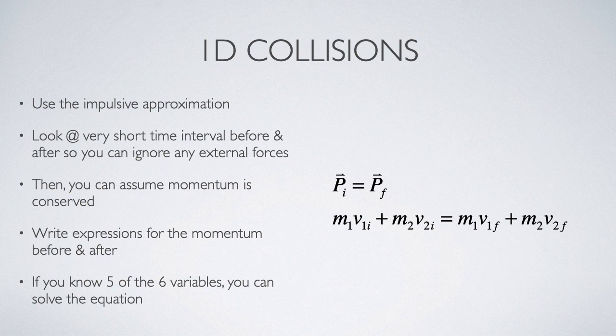So here's an example applied in a one-dimensional collision. Because the collision is one-dimensional, like my carts on the track, then I can handle the vector nature of momentum with plus and minus signs. I don't have to worry about angles and components. Assuming that we can apply the impulsive approximation, then we can say that the momentum is conserved. So I write expressions for the momentum before and after. The first term in that second equation is the momentum of particle one before the collision. The second term is the momentum of particle two before the collision. On the right hand, the first term is particle one's momentum afterwards, and the final term is particle two's momentum afterwards.